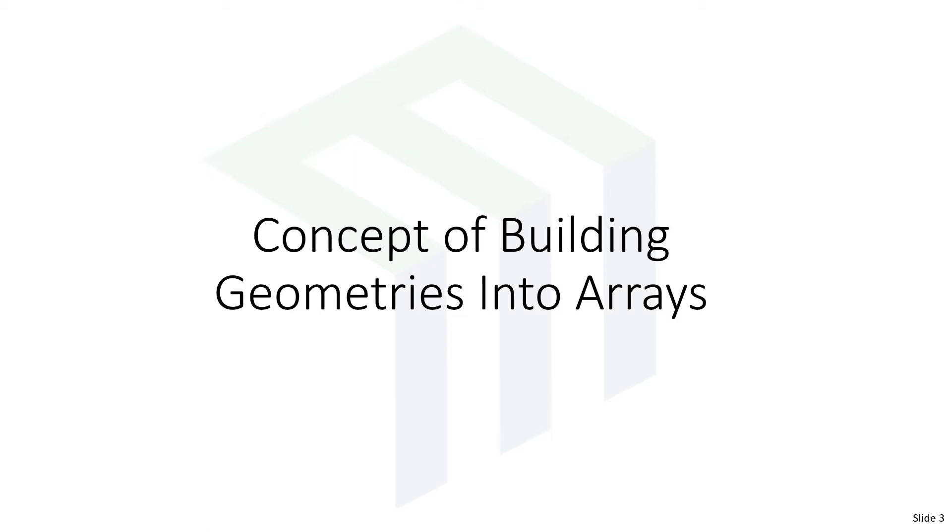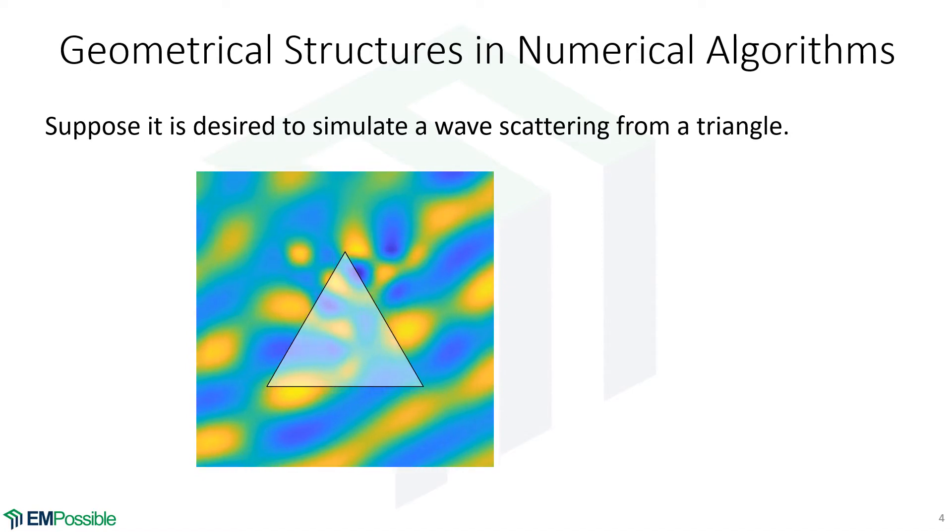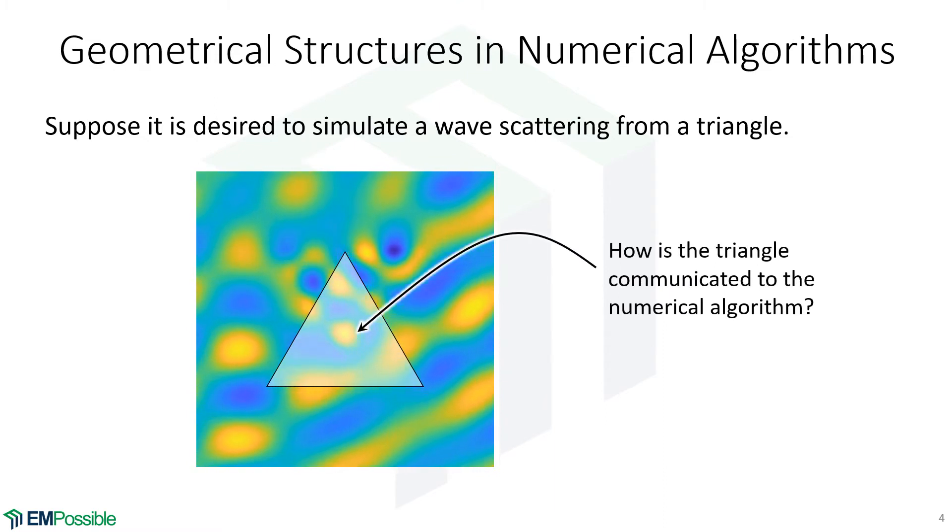Eventually we'll get to the point where we are writing rather advanced algorithms. What we're seeing here is the result of a simulation of a wave bouncing off of a triangle and interacting with it. This was actually a rigorous electromagnetic simulation. Question is, how do we communicate to our numerical algorithm that there's a triangle there? How do we tell it the size, the material properties? That's the concept of building a geometry into an array.